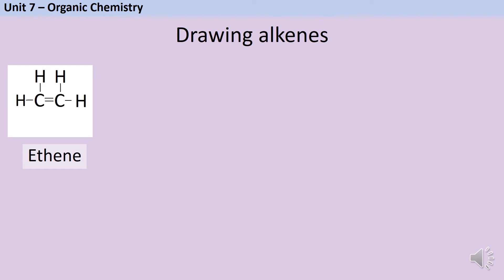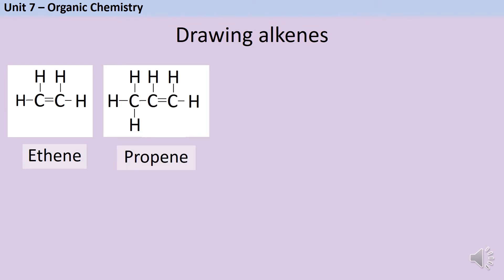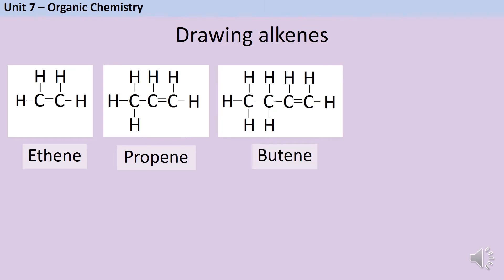We've already met ethene, so our second alkene is propene — there's one carbon-carbon double bond and the additional carbon is single-bonded into the chain. Our third alkene is butene, again with one double bond and every carbon atom making four bonds in total. The fourth alkene contains five carbon atoms and is called pentene — just like a five-sided shape is called a pentagon, an alkene with five carbon atoms is called pentene.